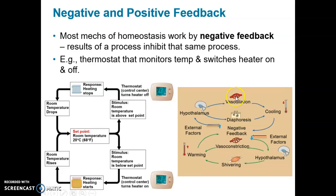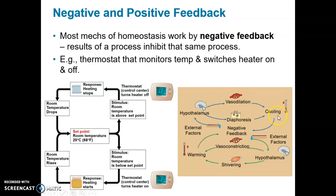The blood vessels near the surface of the skin open up — increased diameter, that's vasodilation — allowing more warm blood near the surface to radiate heat away. Diaphoresis, meaning sweating, increases evaporative cooling: the sweat dries and cools the body. Those two responses wind up cooling the body. Once the temperature gets back to the set point, the hypothalamus detects that return and shuts down the responses of increased blood flow to the skin and sweating.